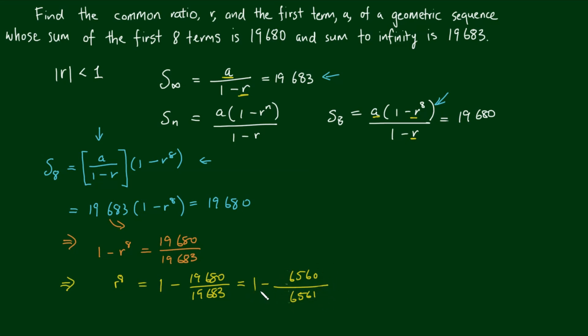Let's make a common denominator between the 1 and the fraction. So we have 6561 on 6561, which equals 1, minus 6560 on 6561. When we subtract these two fractions, we get 1 on 6561.